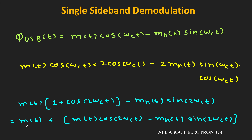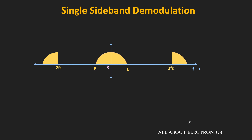With the help of a low-pass filter, we can recover the message signal m(t), since the USB signal components get shifted to frequency 2fc and are removed. As already seen in the frequency domain, using a low-pass filter it is possible to recover the message signal.